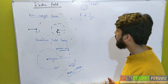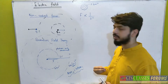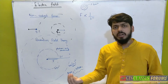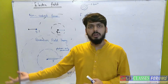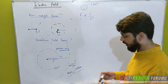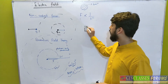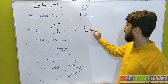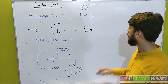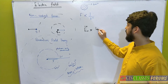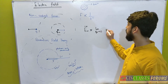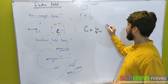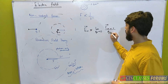Now we will talk about unit charge. If the unit charge experiences more force, then by unitary method we will say that if unit charge experiences that much force, then the electric field at a point P is defined as the net electric force per unit charge — limit q₀ tending to 0, F_net electric per unit charge.